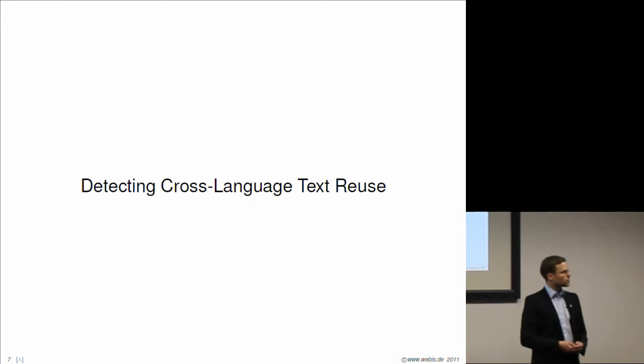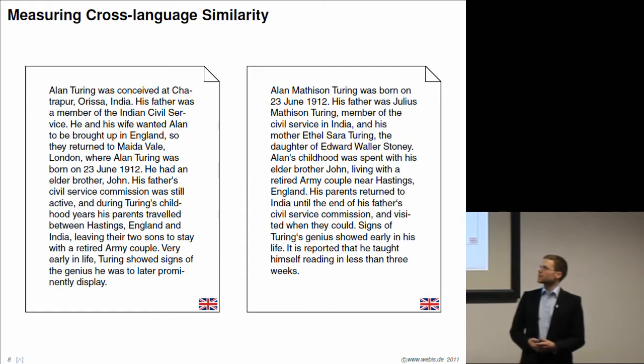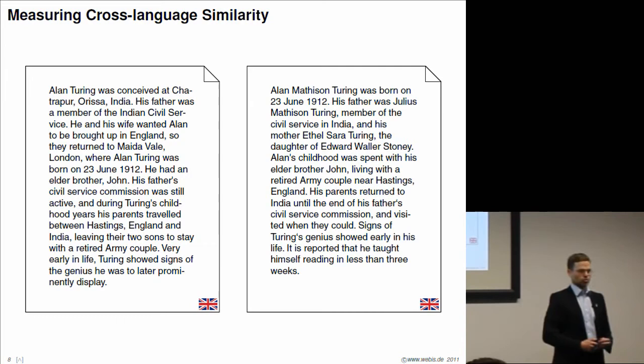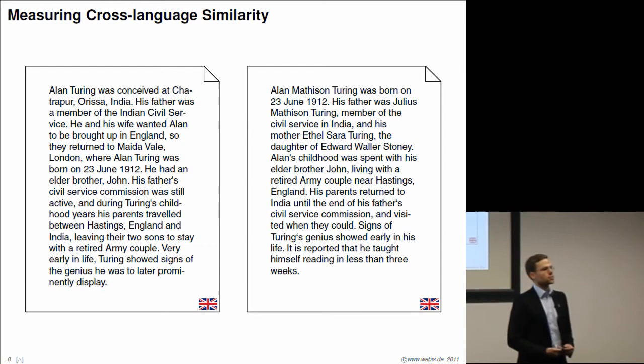The first one is about detecting cross-language text reuse. Now, as a start, consider these two texts. Both of these texts talk about the childhood and youth of Alan Turing, a famous computer scientist. Both texts are written in English. They have the exact same topic. We know that because we can read them and understand this. For an information retrieval scientist, we want to teach a computer to quantify the topic similarity of these two texts as a real value.